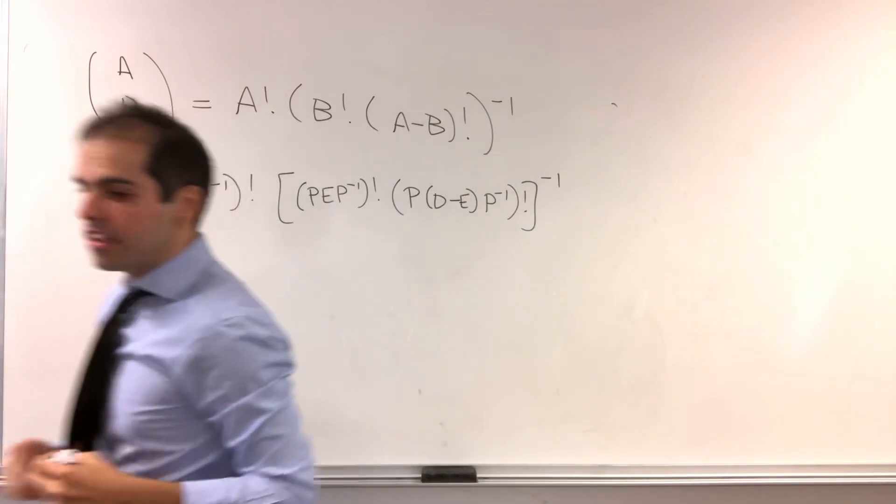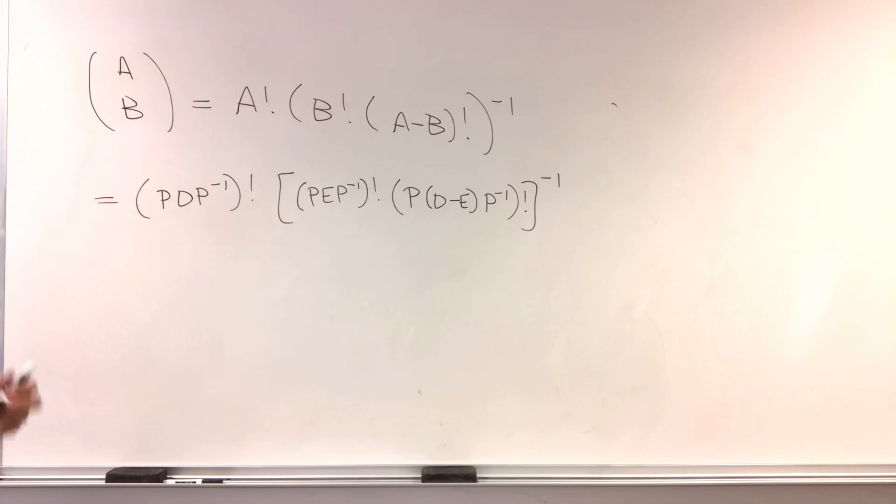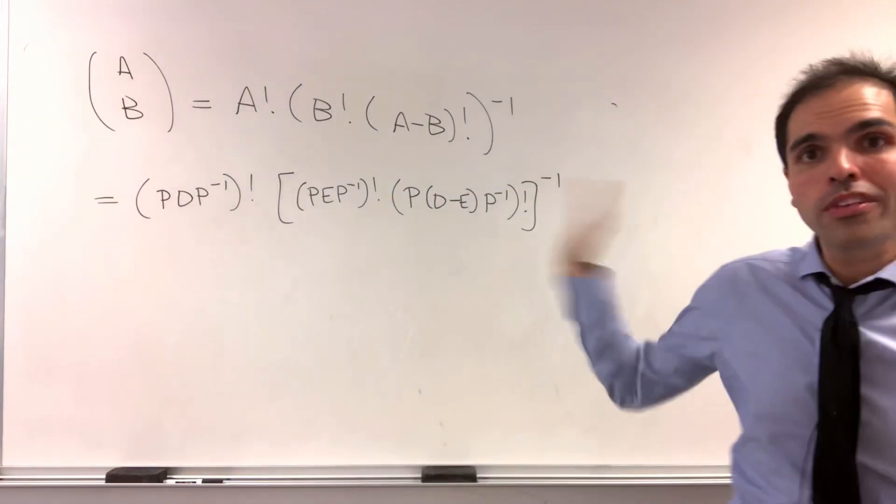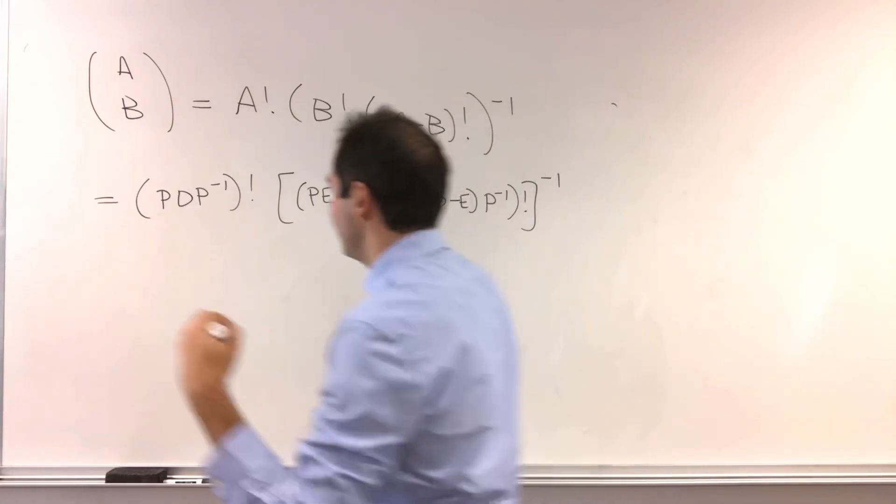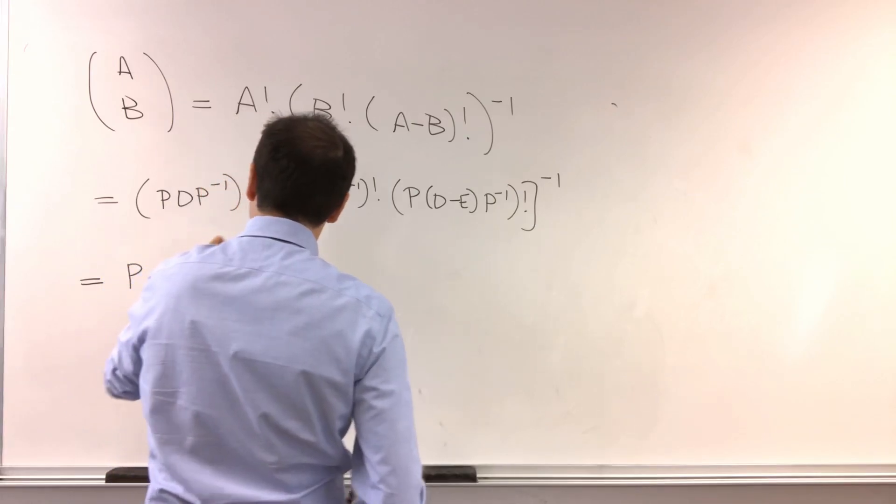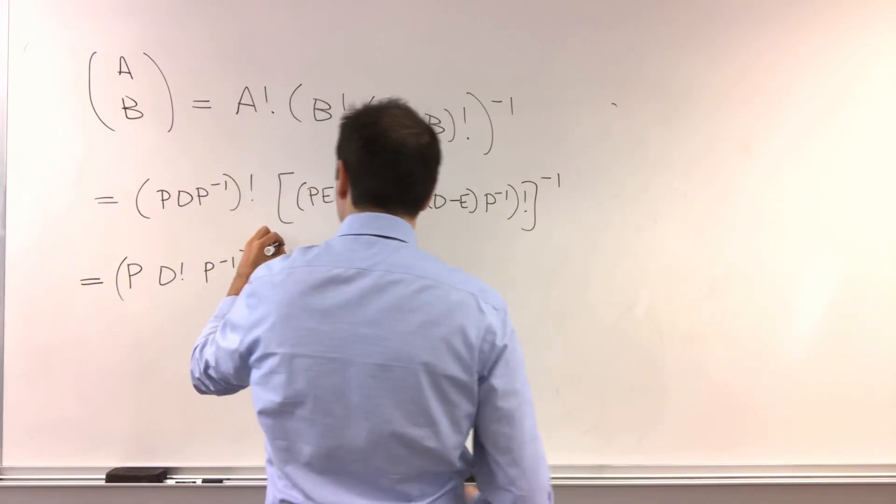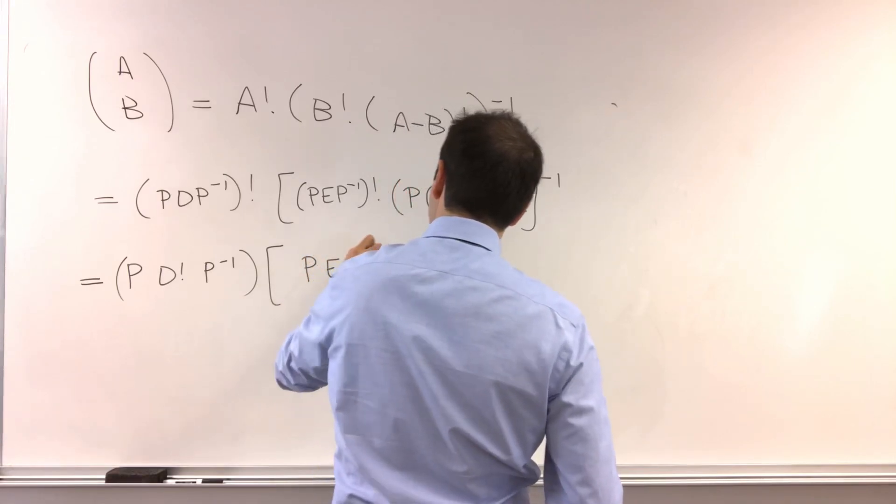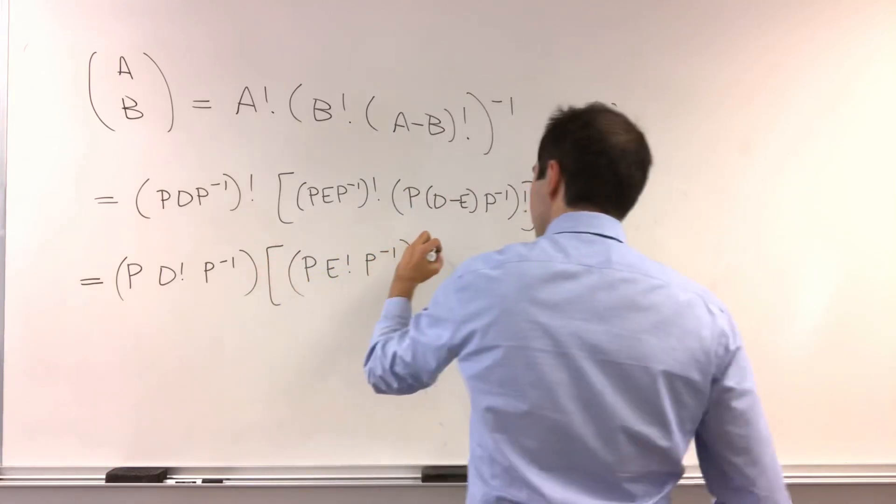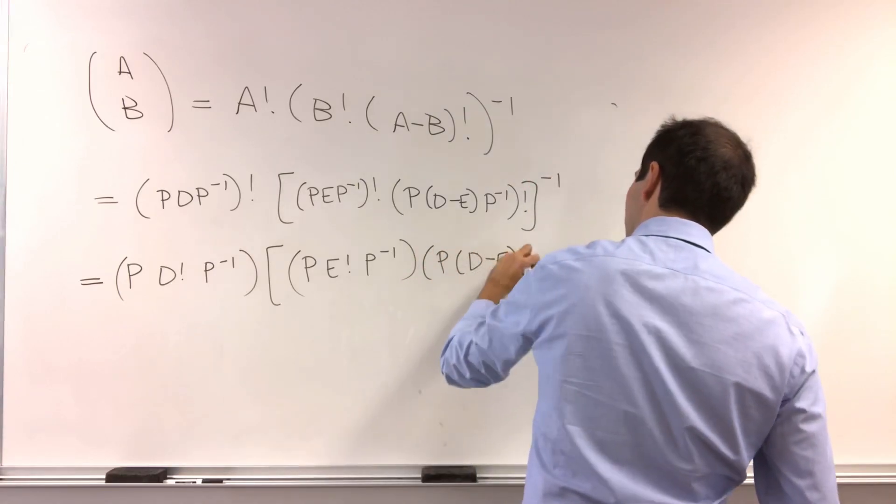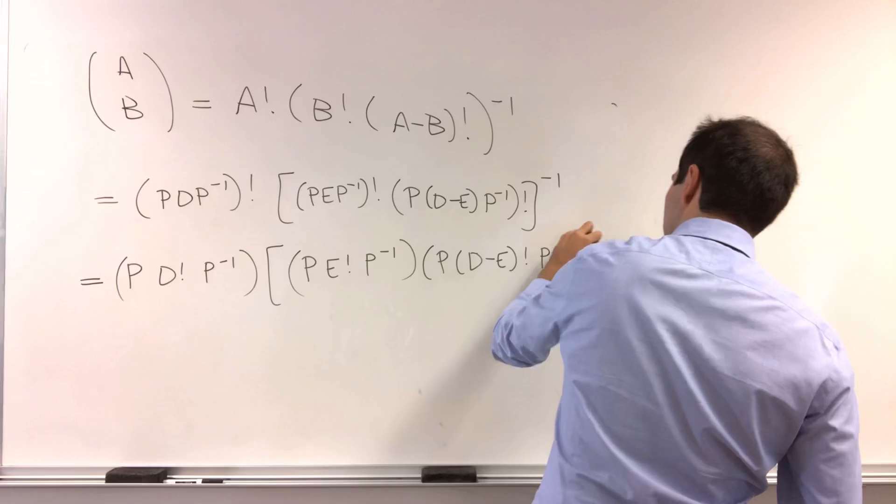The beautiful thing is, and I've done a video on this, if you want a factorial matrix that's diagonalizable, it's enough to put the factorial in the eigenvalues. So this becomes p, d factorial, p inverse, and then times, again here, p, e factorial, p inverse, times p, d minus e, factorial, p inverse, inverse.